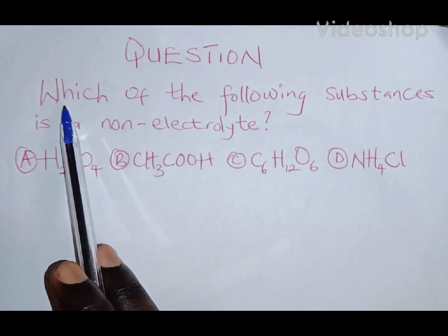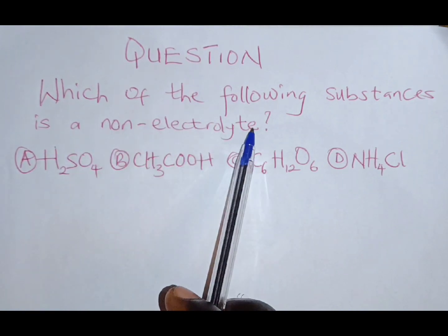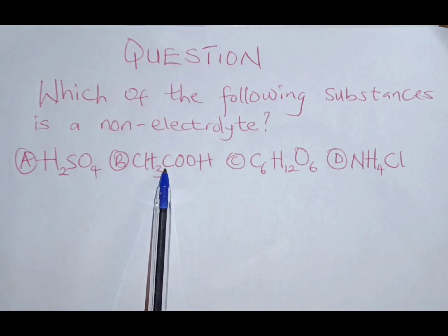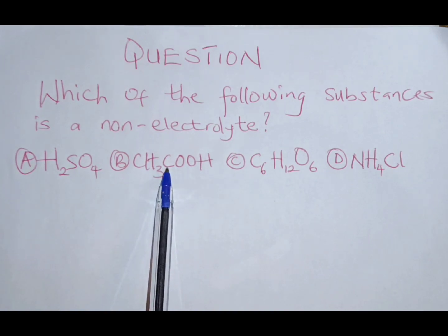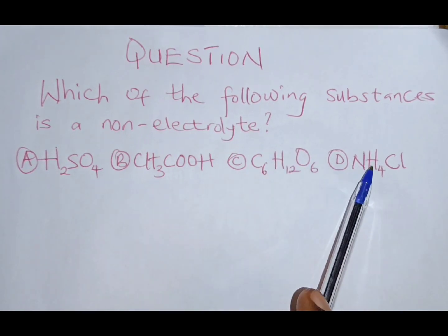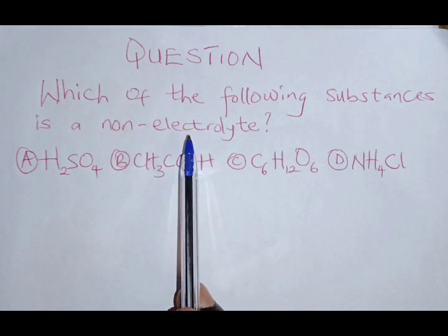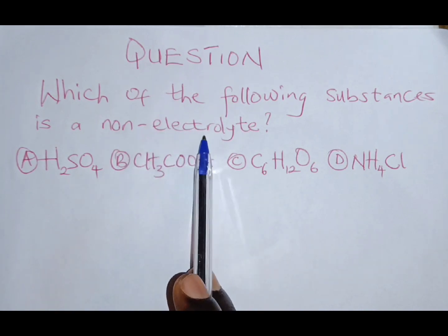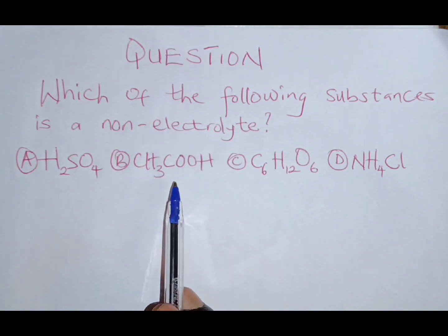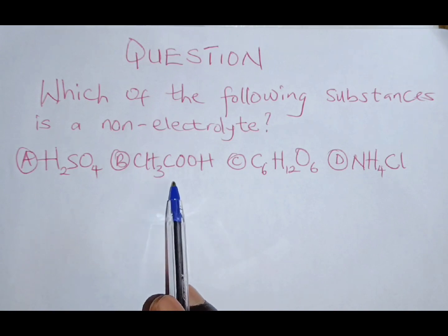We have a problem to solve: which of the following substances is a non-electrolyte? The options are sulfuric acid, ethanoic acid (acetic acid), glucose, and ammonium chloride. A non-electrolyte is a substance that does not produce ions in a solution — it does not dissociate into ions when dissolved in water.